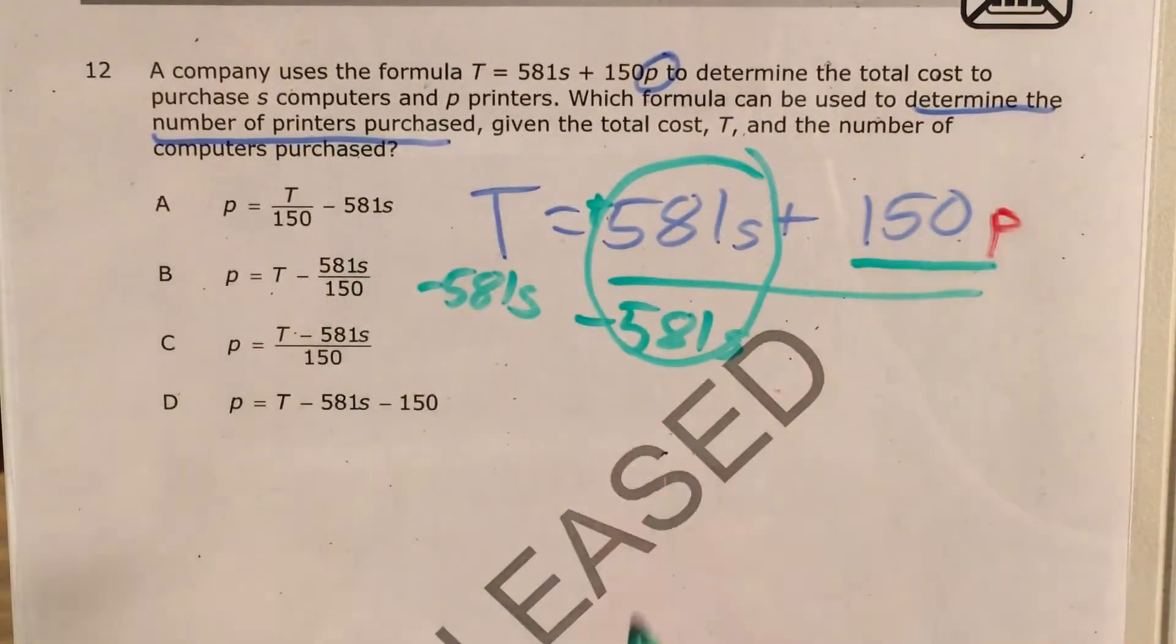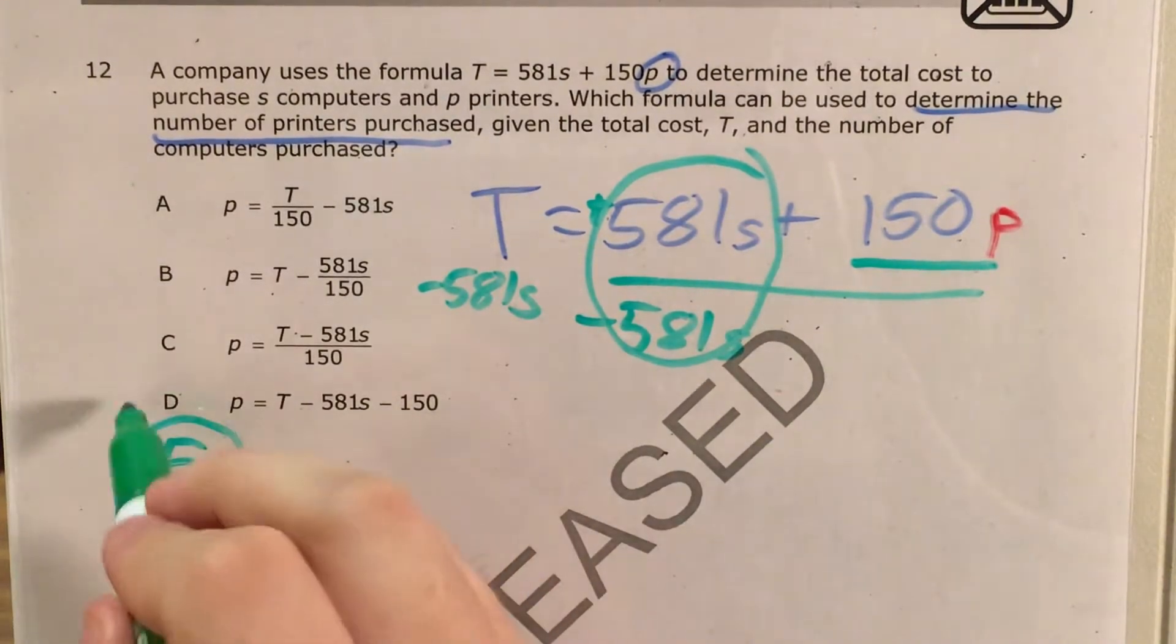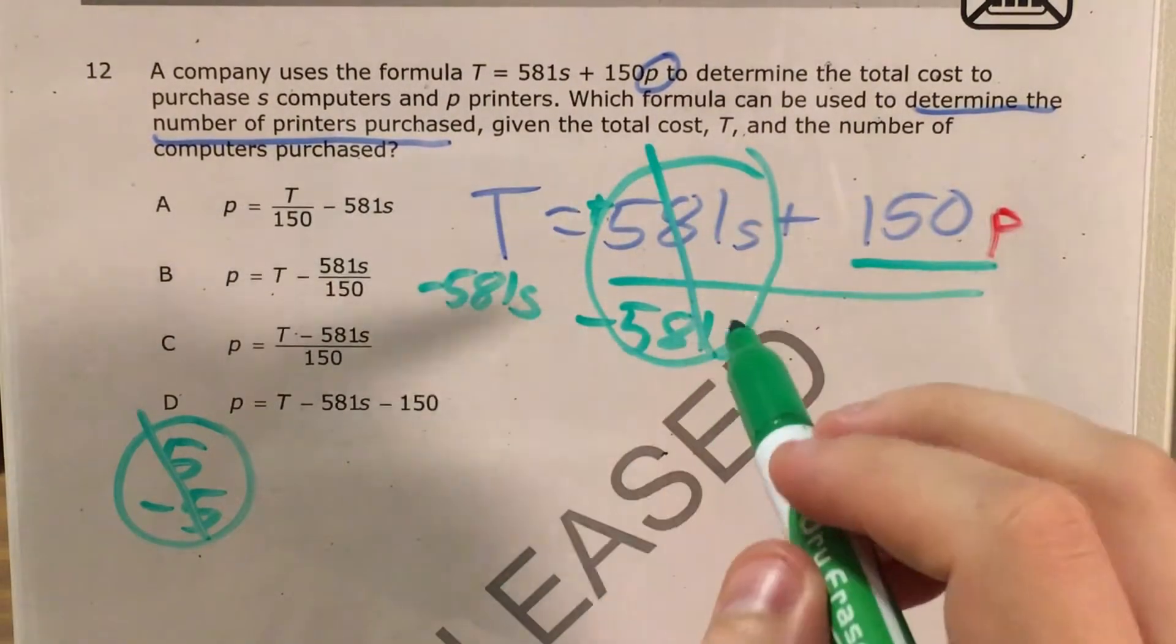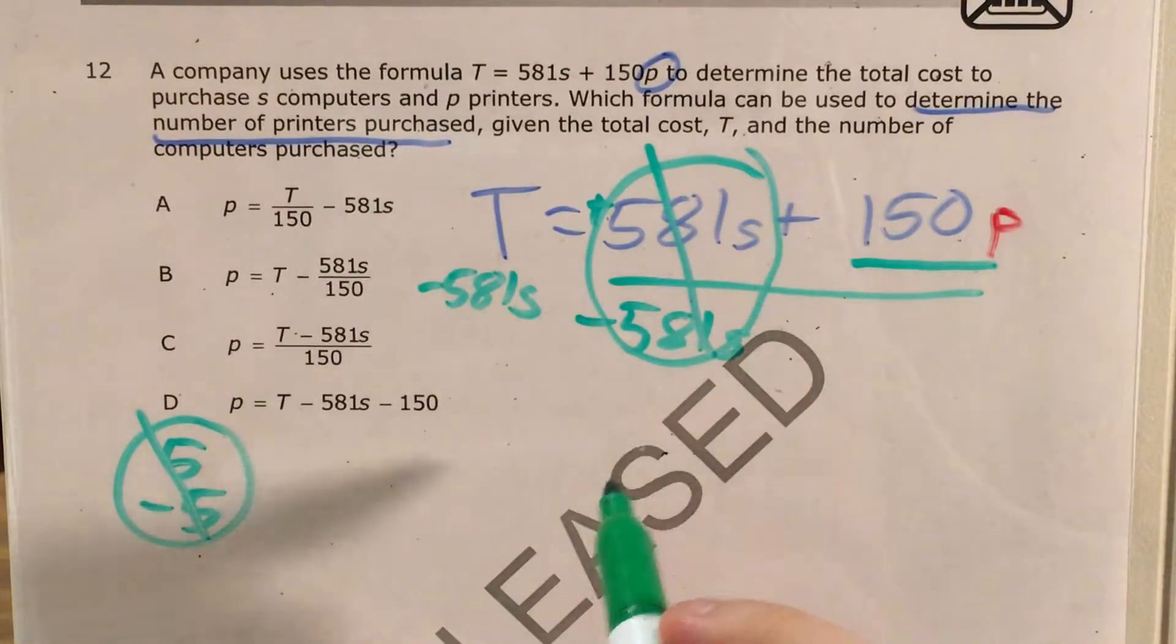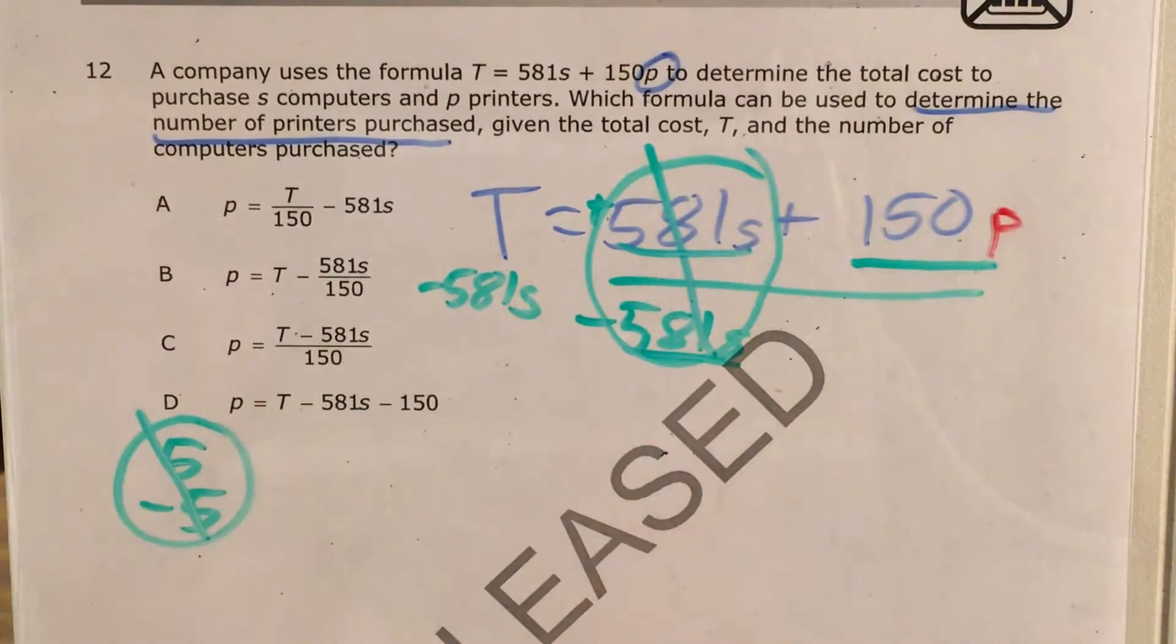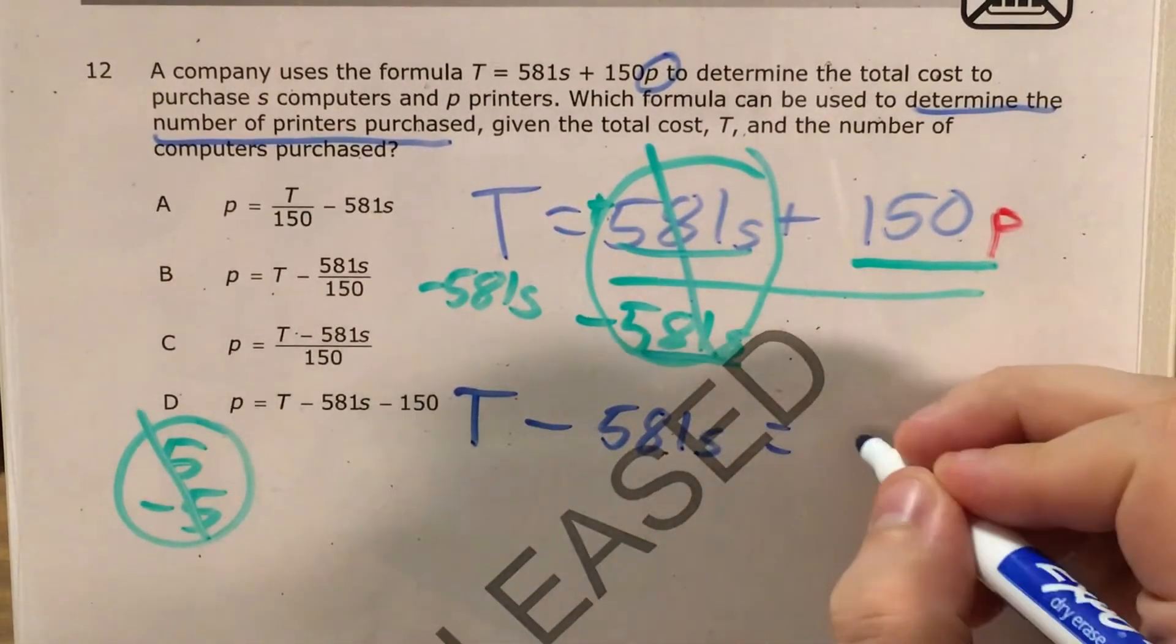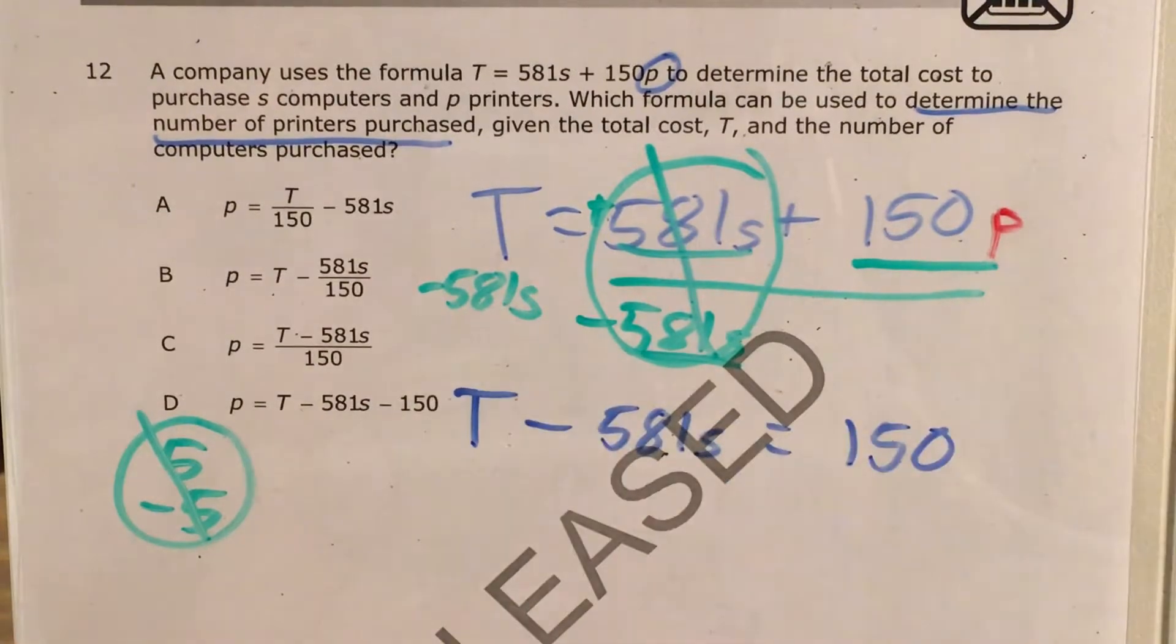So 581s minus itself is the same thing as if I were to write 5 minus 5. This goes away. This goes away. Even though there's a letter, we still consider it to be 581s and 581s. We still consider those the same number. Which brings me now to T minus 581s equals 150p.